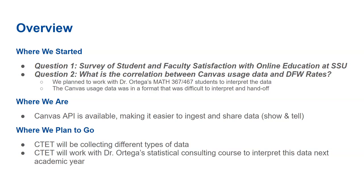What we found was that the Canvas usage data was in a format that made it really difficult to identify, interpret, or hand off. So that created a barrier for us. Where we are now is that the Canvas API is available, making it easier to ingest and share that data. Where we plan to go is a continued collaboration with Dr. Ortega's statistical consulting courses to interpret the data during the next academic year, although that might be outside of the Square project.